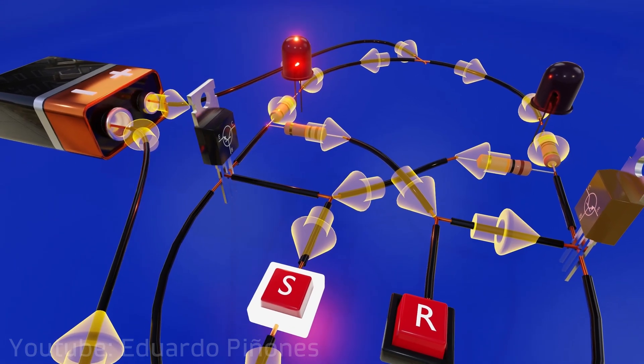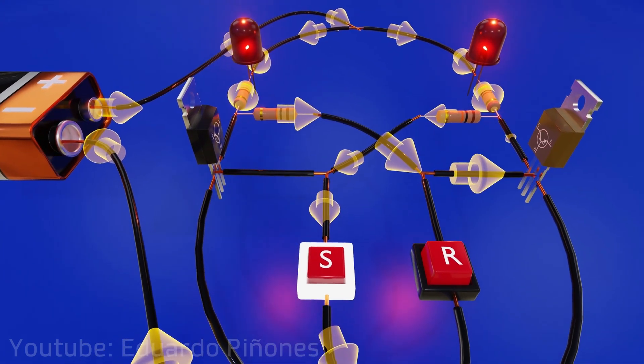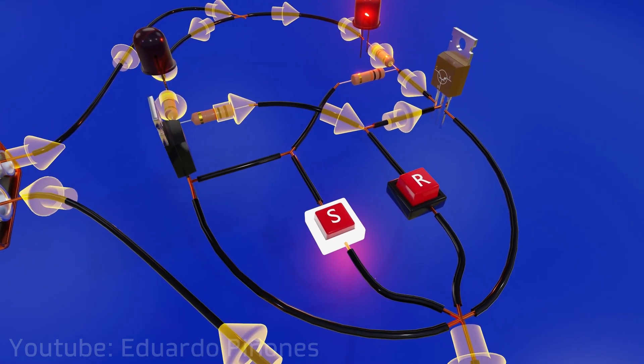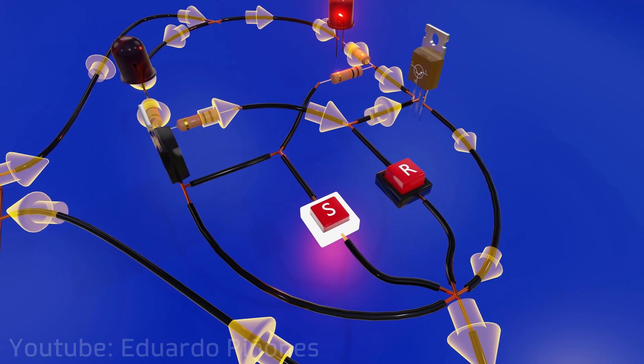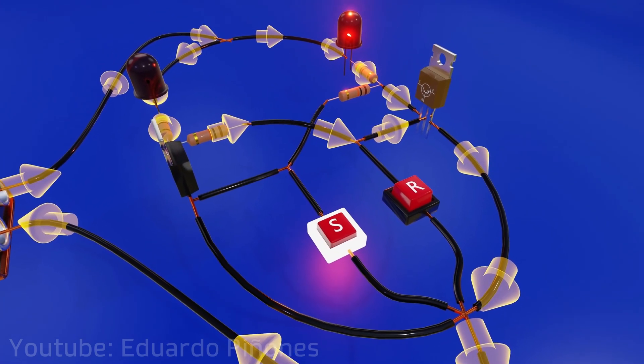And fourth, having current at the base of the transistor on the right will allow the current to pass between its collector and emitter so that the current that was already diverted to the left now passes directly to the negative pole of the power supply, returning again to a stable position, with the LED on the opposite side being illuminated.